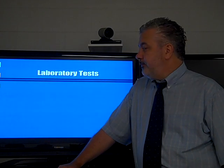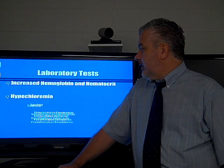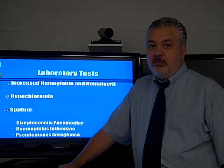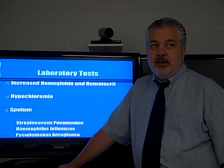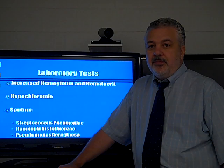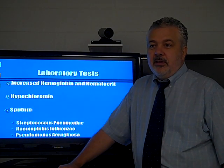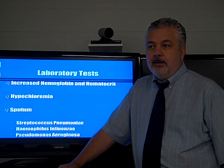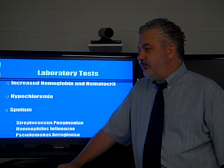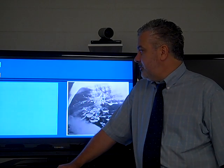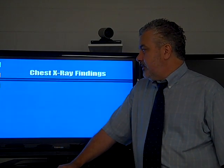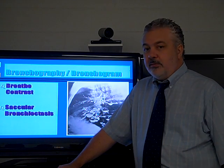Sputum culture and sensitivity is a good idea for these patients. Patients with chronic lung disease of any kind can have elevated hemoglobin and hematocrit levels — secondary polycythemia related to pulmonary disorders, especially COPD and obstructive diseases. Associate bronchography — the patient breathing contrast — with bronchiectasis diagnosis.